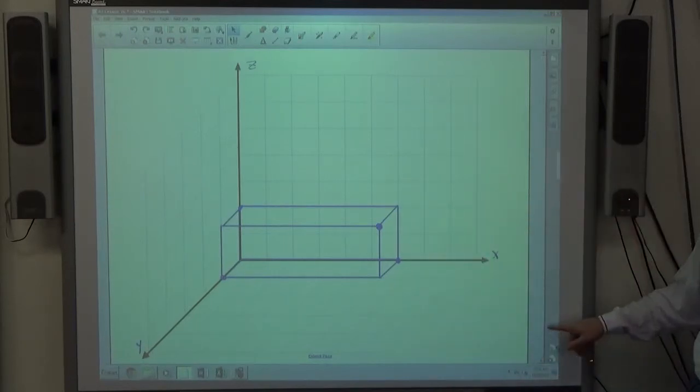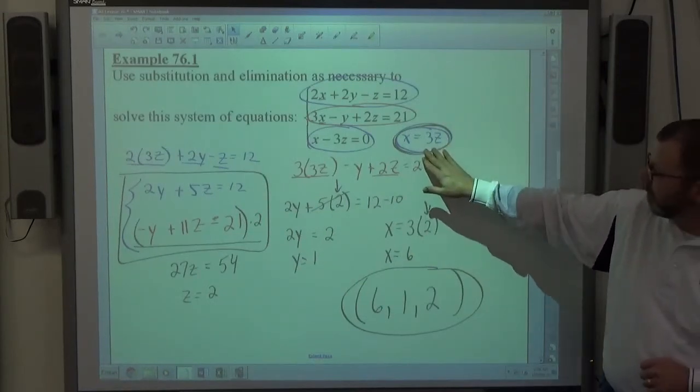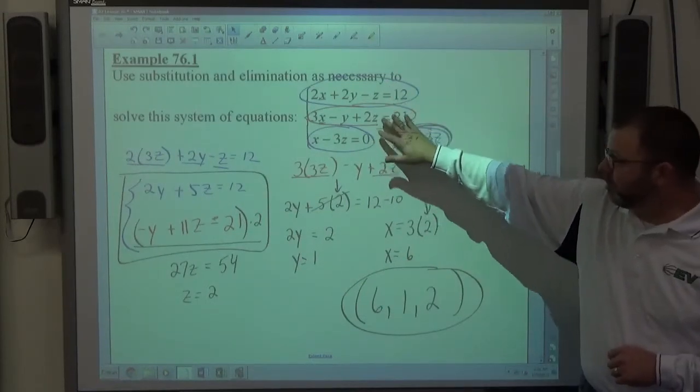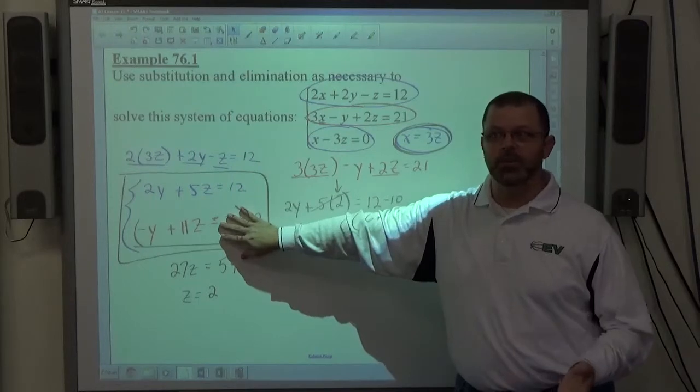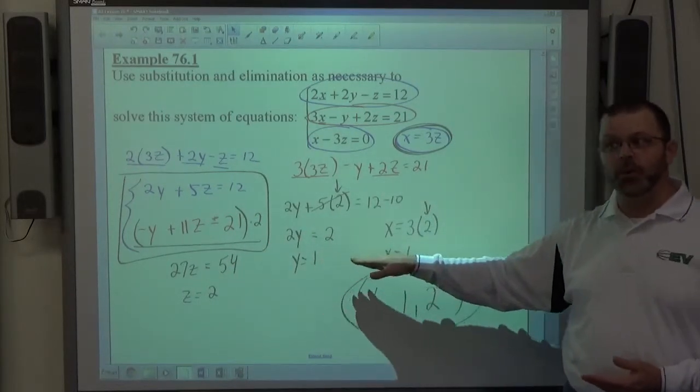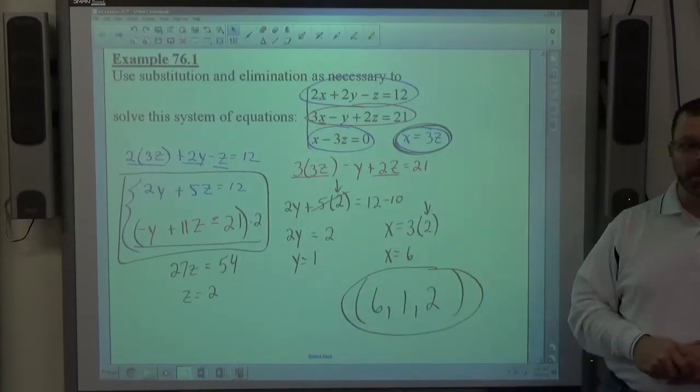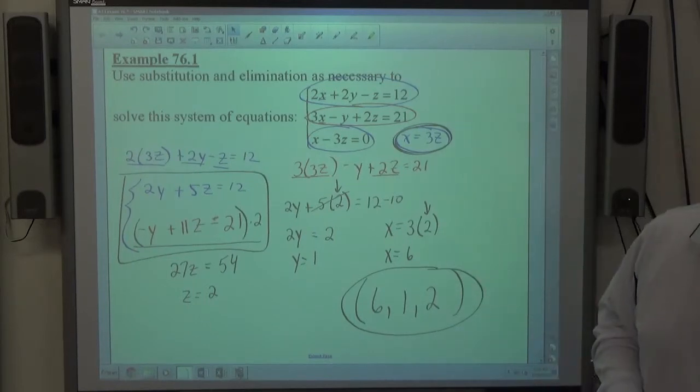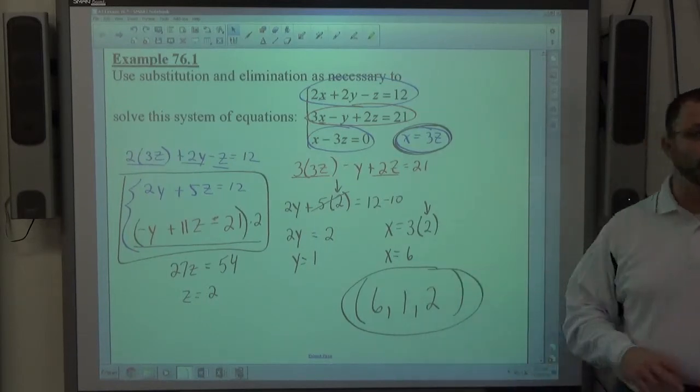But, again. That's what we're looking for here. A substitution to change a three-system into a two-system. Solve the two-system like normal. And, then use either one of those answers to find the missing piece. Or, maybe even both to find the other piece. Once you've found all three, ordered triples your final answer.